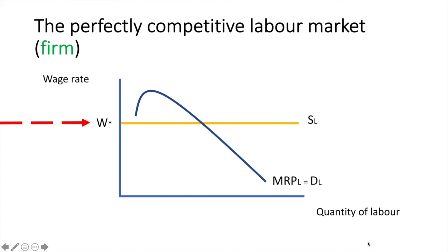The maximum a firm is willing to pay is equal to the marginal revenue that unit of labour can bring in. The wage rate has already been set in the market and results in a quantity of labour employed for the firm of Q1. Changes in the MRP or the market wage rate would impact the level of employment in this firm.